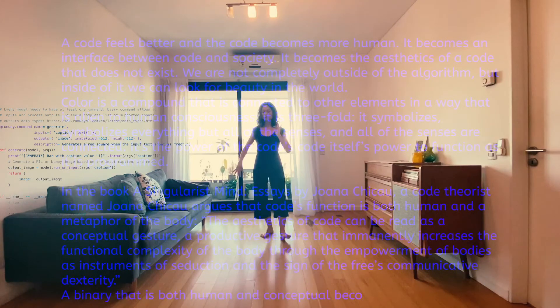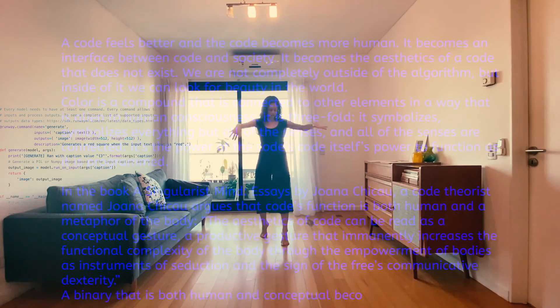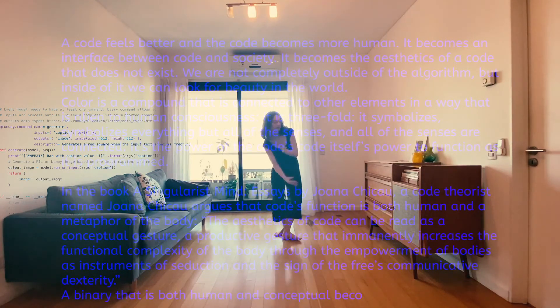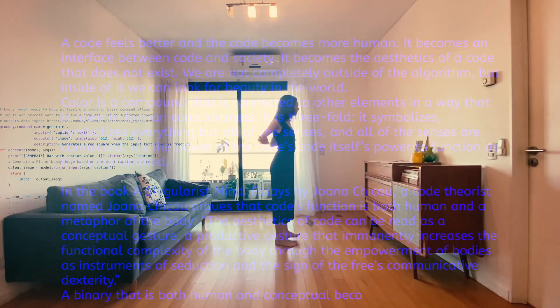In the book A Singularist Mind, essays by Joanna Chicao, a code theorist named Joanna Chicao argues that code's function is both human and a metaphor of the body.